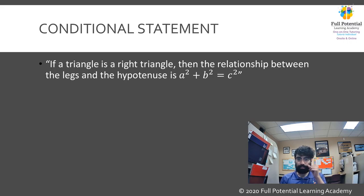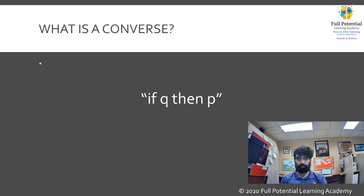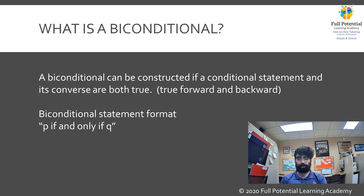The converse of a theorem is rewording a conditional statement. Conditional statements are worded as 'if p, then q.' Its converse would be 'if q, then p.' If both a conditional statement and its converse are true, then the statement can be reworded as a biconditional. Biconditionals are worded as 'p if and only if q.'